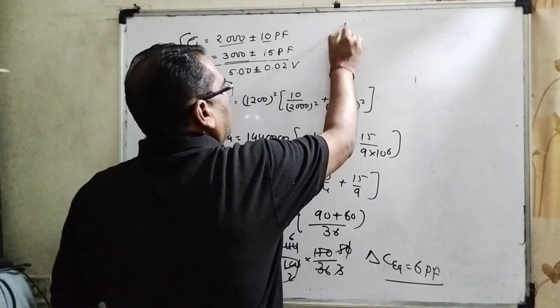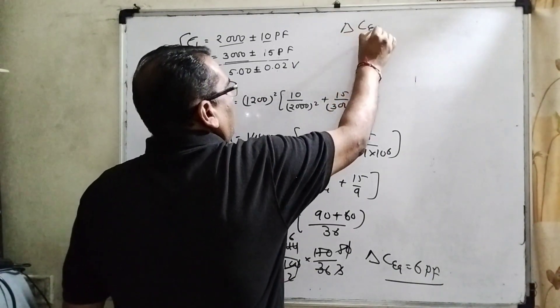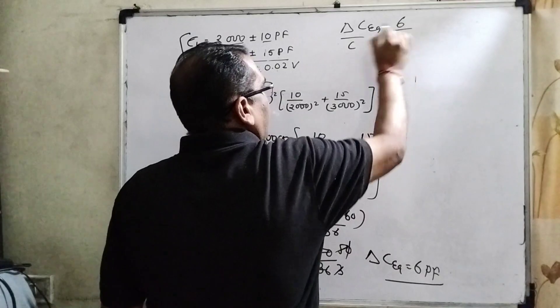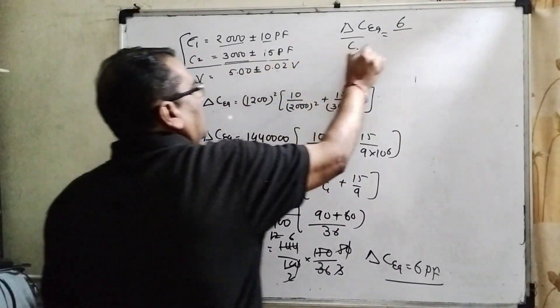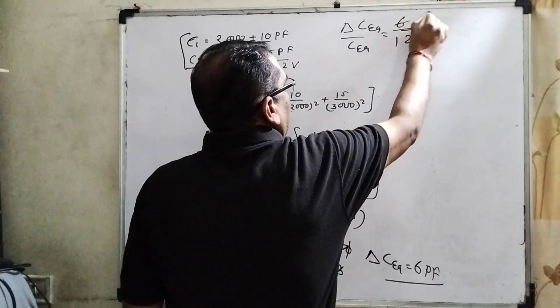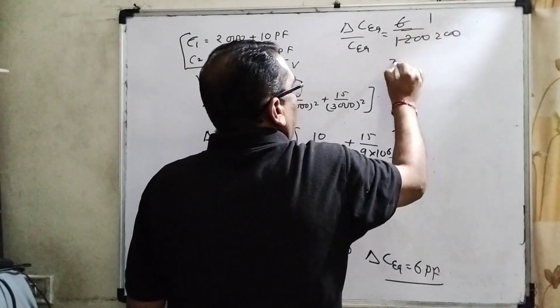So here delta C_eq upon C_eq can be written as 6 picofarad upon its value C_eq, which is 1200. That means 1 by 200.